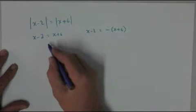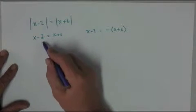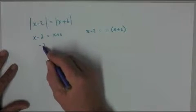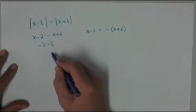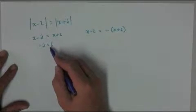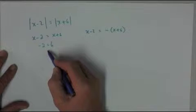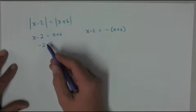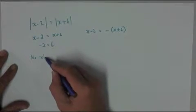So in this situation here, we would have -2 is equal to 6, so there are no x's here anymore. This obviously doesn't work, so there is no solution to this.